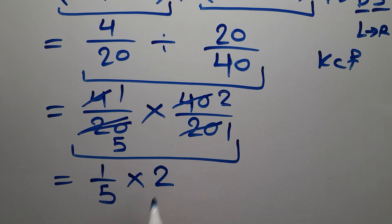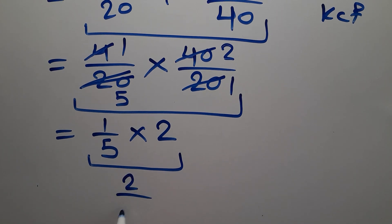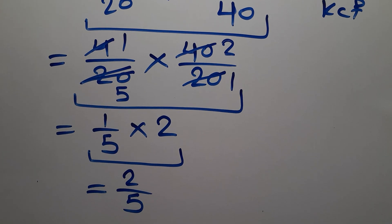So 1 over 5 times 2 equals 2 over 5. And this is our final answer to this problem.